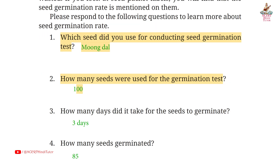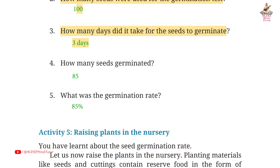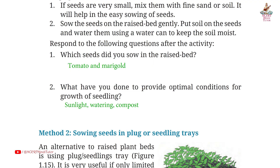Third: how many days did it take for the seeds to germinate? Answer: 3 days. Fourth: how many seeds germinated? Answer: 85. Fifth: what was the germination rate? Answer: 85%.